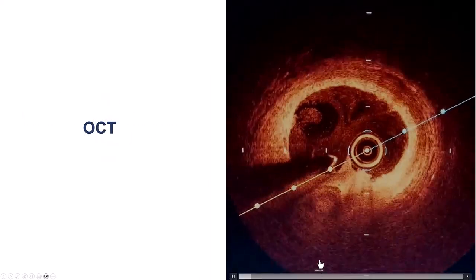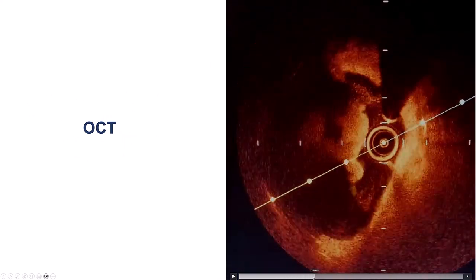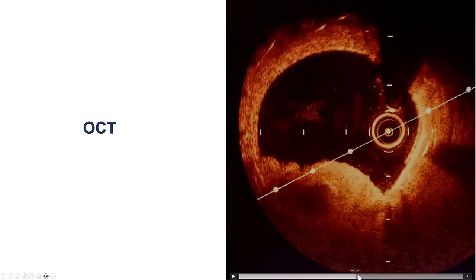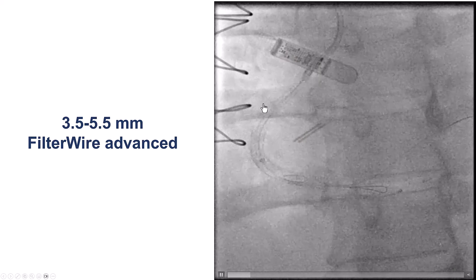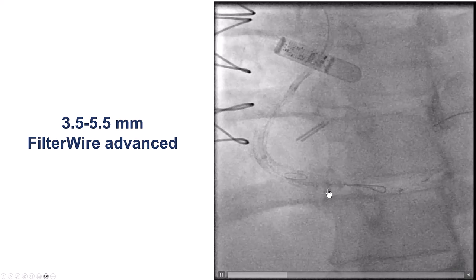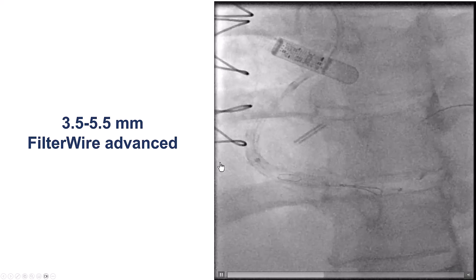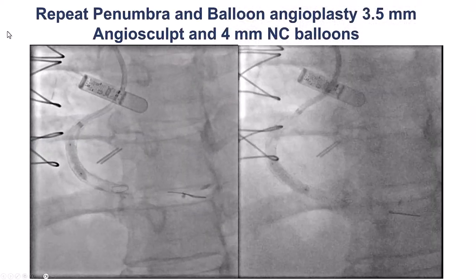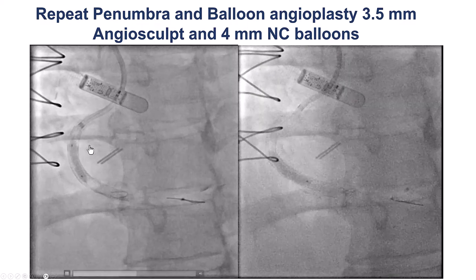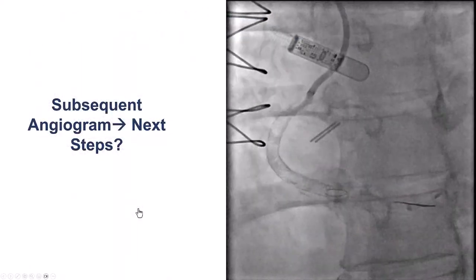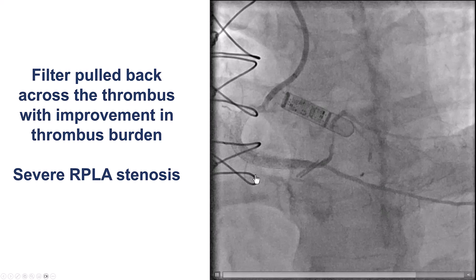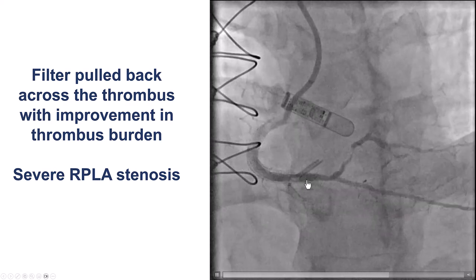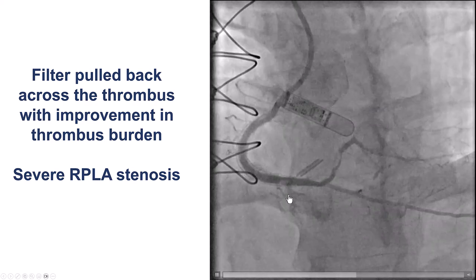Once again we performed optical coherence tomography, revealing large thrombus burden inside the RCA in multiple locations. Another approach was to advance a filter wire distal to the thrombus and try to retrieve it. We did multiple aspirations with the Penumbra device and balloon angioplasty, using the filter as a potential capture mechanism. The next injection showed a little improvement, but still a large filling defect. We pulled the filter back trying to scoop out thrombus, with some improvement but still a filling defect present.